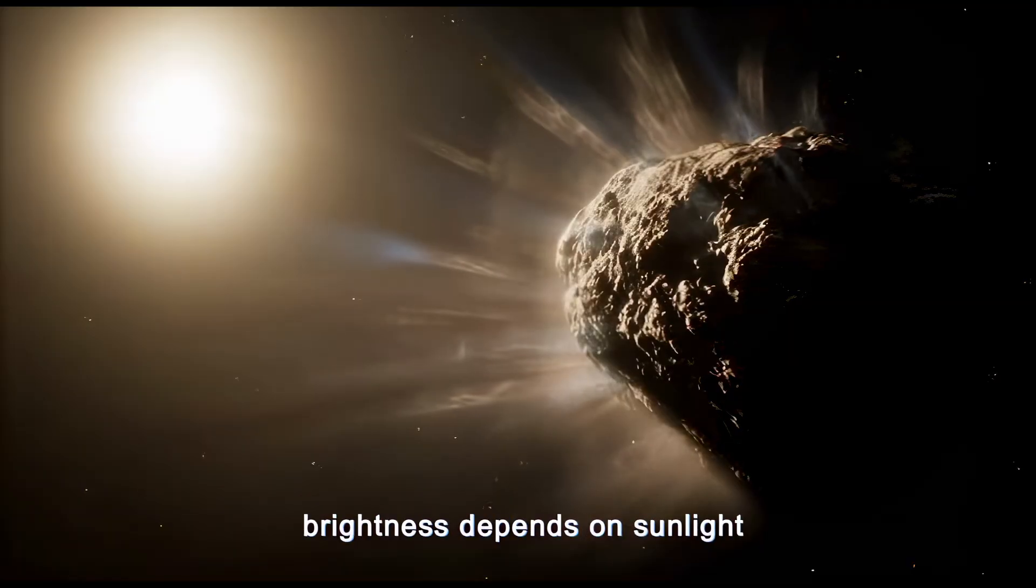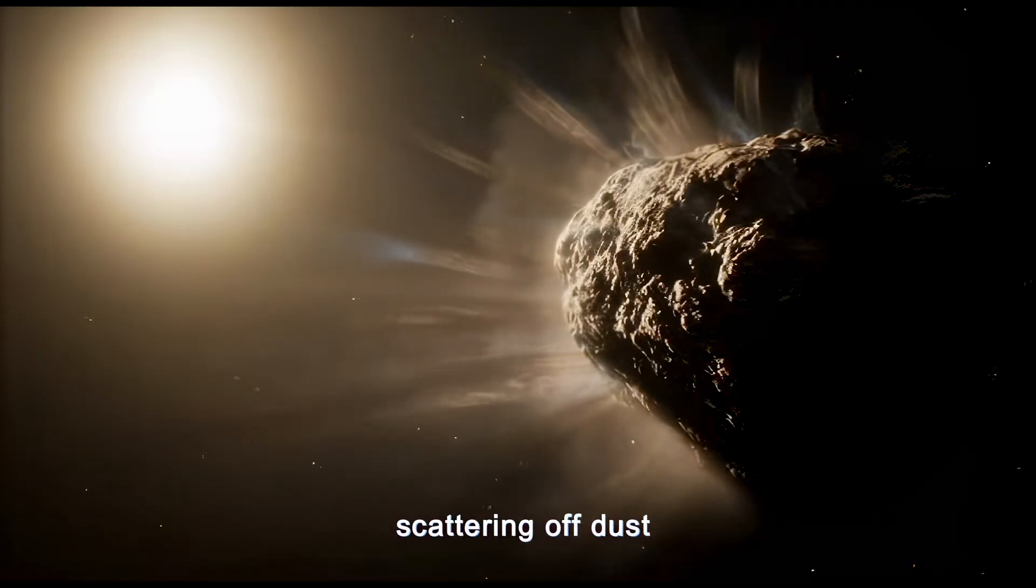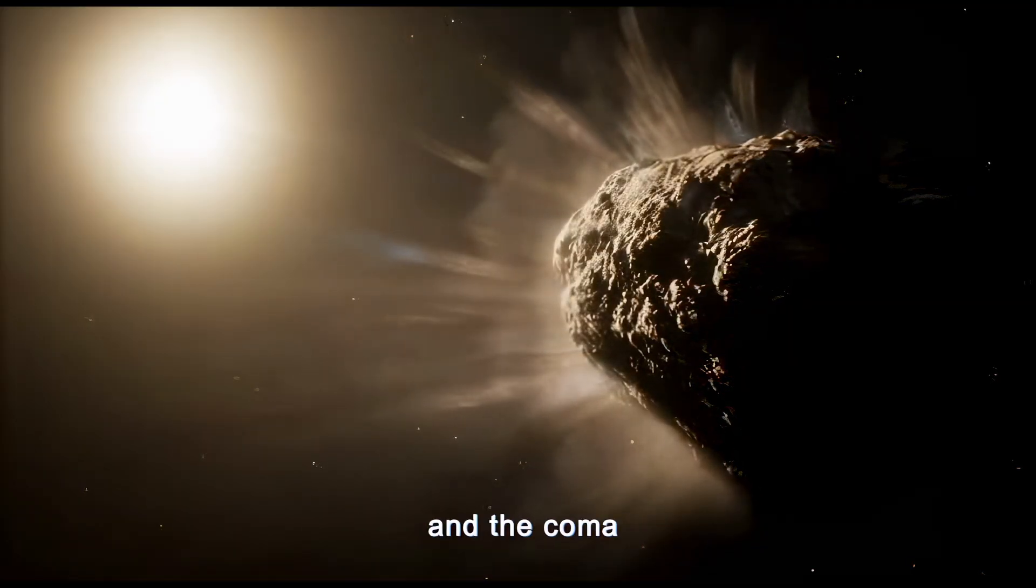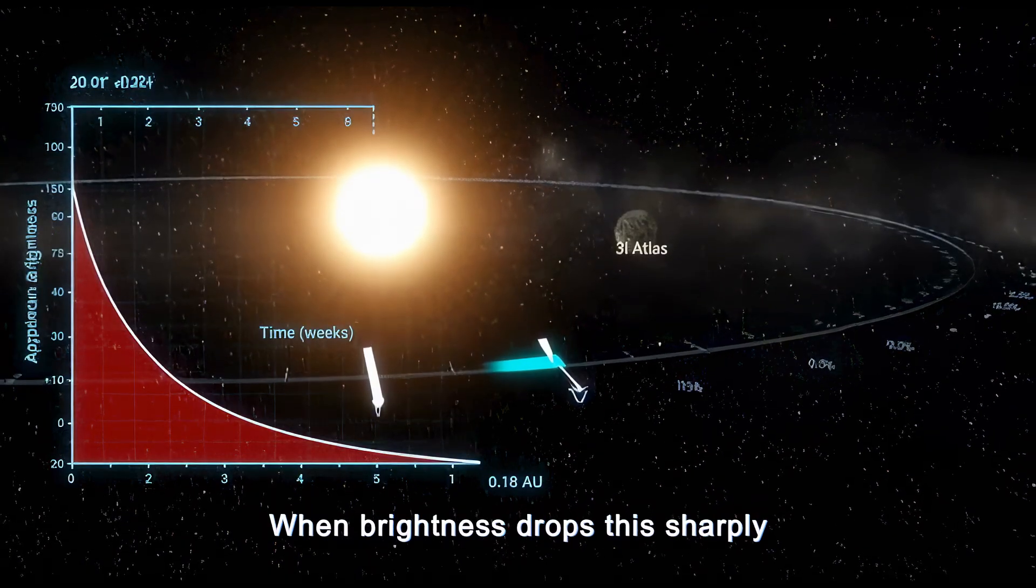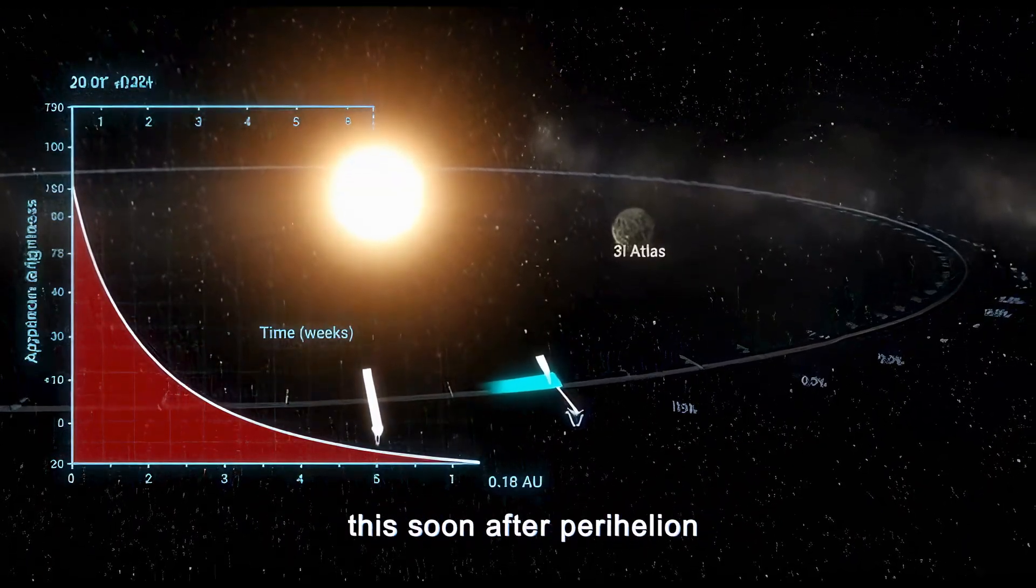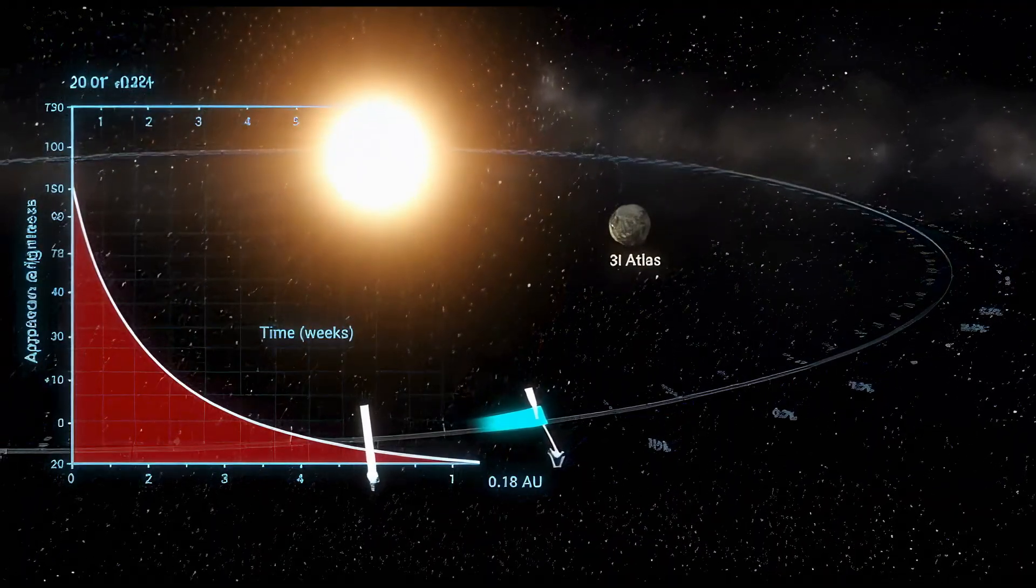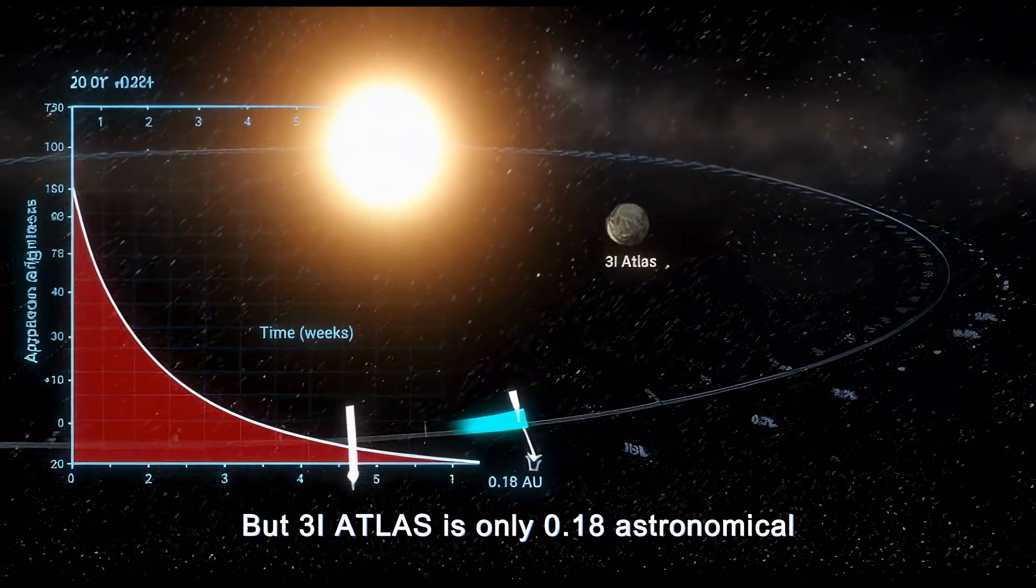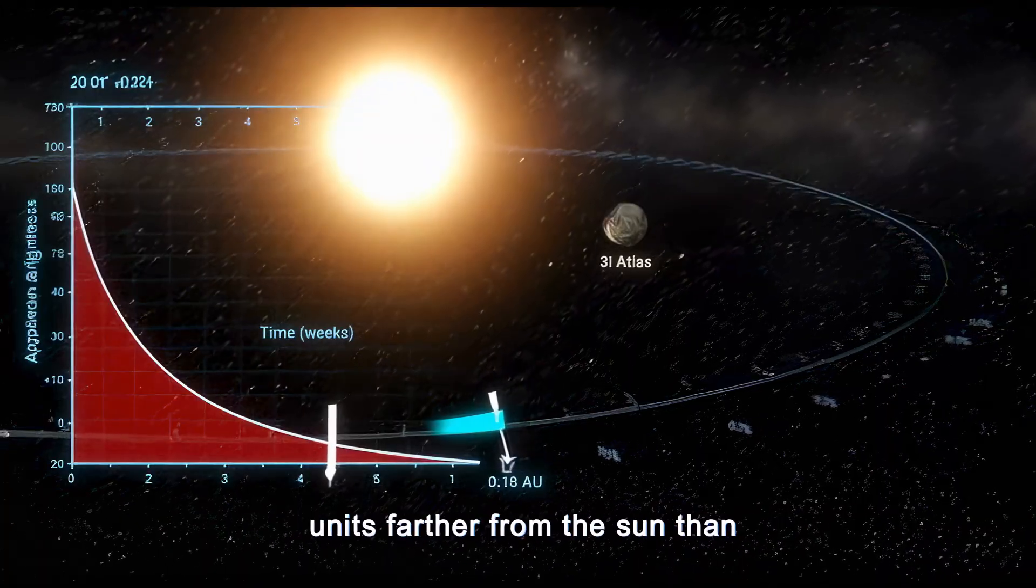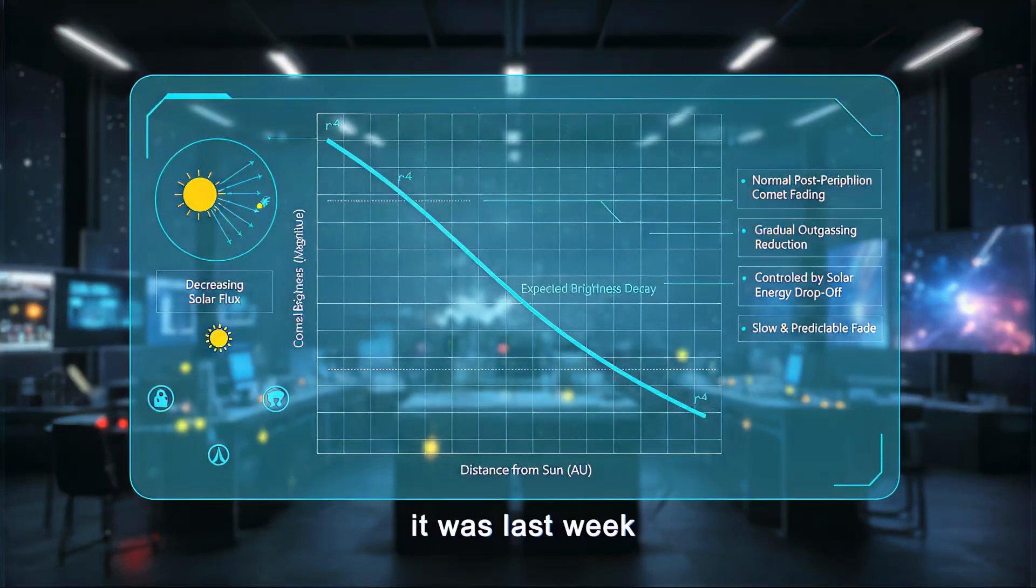For a typical comet, brightness depends on sunlight scattering off dust, gas, and the coma. When brightness drops this sharply, this soon after perihelion, it usually means activity is shutting down quickly.